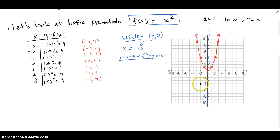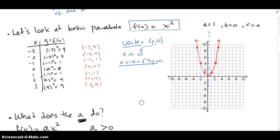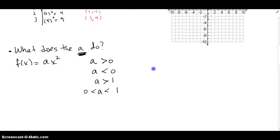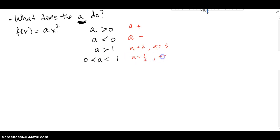Let's go analyze some other forms using a graphing calculator. We're going to ask what the a in ax² + bx + c is doing. If I have f(x) = ax², the cases we're going to look at are: what if a > 0 (a is positive), what if a < 0 (a is negative), what if a > 1 like a = 2 or a = 3, and what if a is between 0 and 1, like a = ½ or a = ⅓ — fractions or decimals smaller than 1.